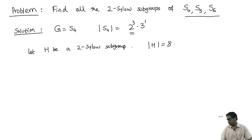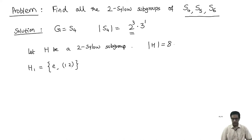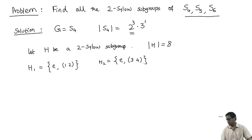Let us try to find a subgroup of cardinality 8. There are some obvious things we can start with. I am looking at all permutations of 1, 2, 3, and 4. For instance, here is one possibility: take the identity E and the transposition (1 2) — this is a subgroup of cardinality 2, since (1 2) squared is identity. Similarly, {E, (3 4)} is another subgroup of cardinality 2.